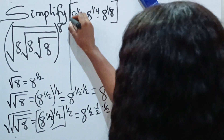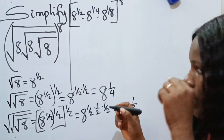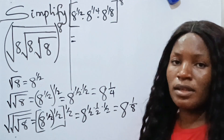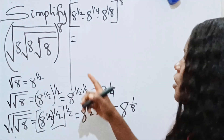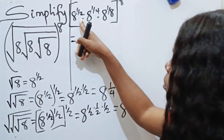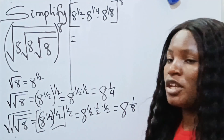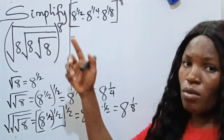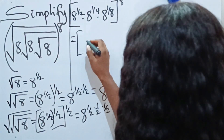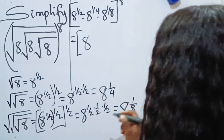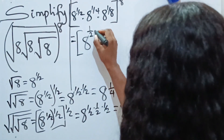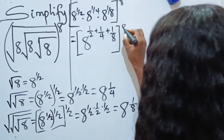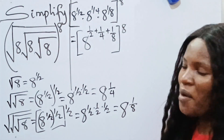In indices or exponents, anytime you have the same base and they are multiplying, you just pick one base and add the powers. So this is the same as 8 to the power of one half plus one quarter plus one eighth, with everything raised to the power of 8.